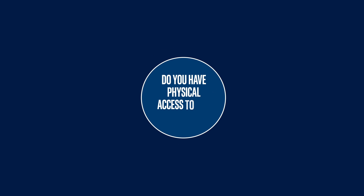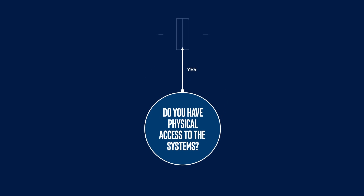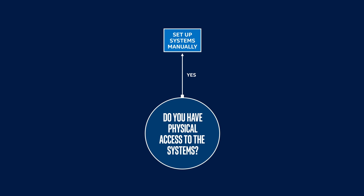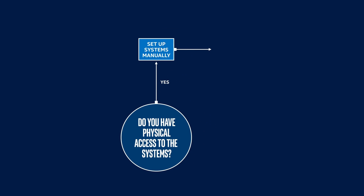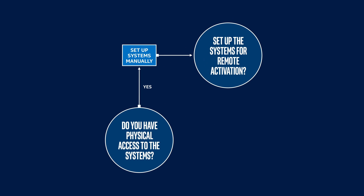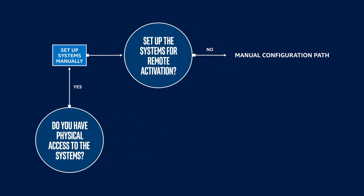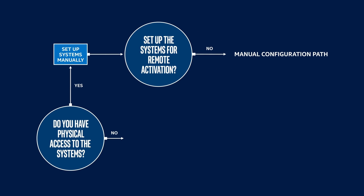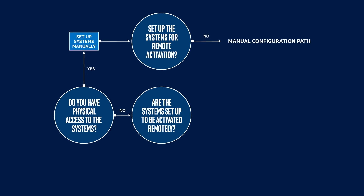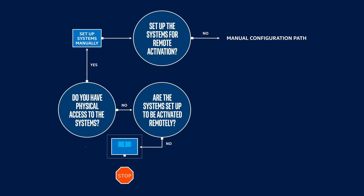The next consideration for activating manageability features in vPro platforms is whether you have physical access to the systems. If you do, such as in the case of initial endpoint deployment, you have the option to set up systems manually. At this point, you may decide whether you will only set up the systems for remote activation or complete a full manual configuration. If you do not have physical access, and the systems are not set up to be activated remotely, you will not be able to configure AMT.